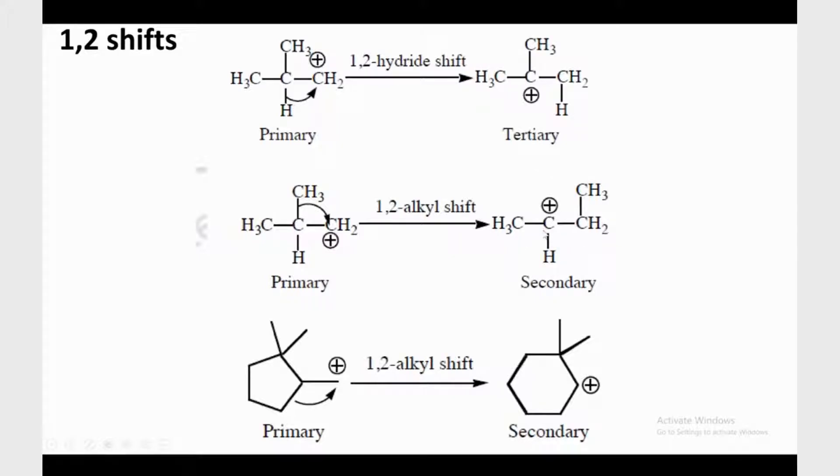And another example where you have a carbocation that is primary, and now this is outside the cyclic. Now what happens? This CH2—that is called 1,2 alkyl shift—will happen and ring enlargement happens. So five-member ring is converted into six-member ring, that is called secondary carbocation.